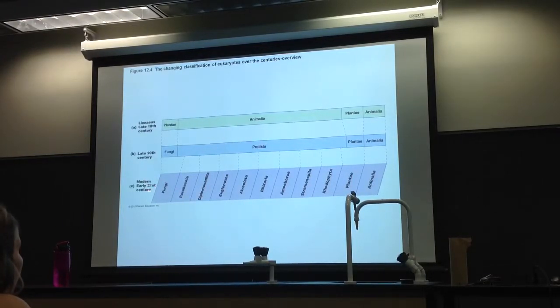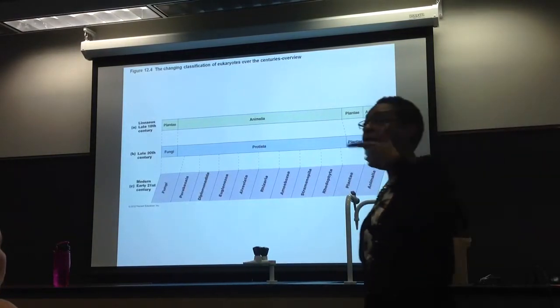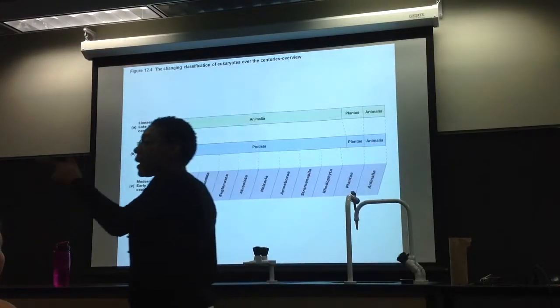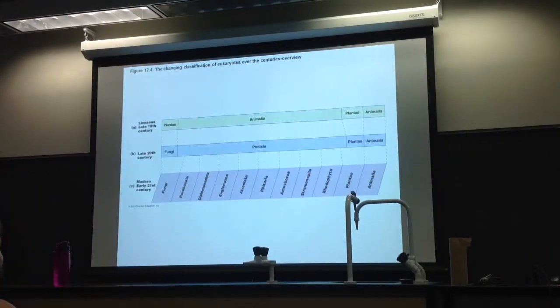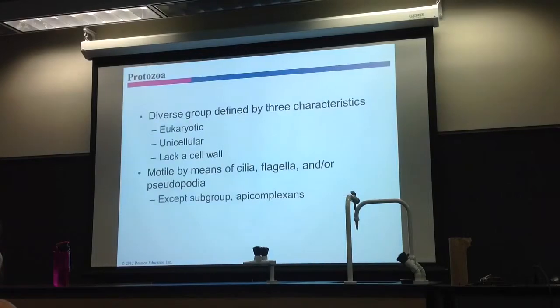But now, in this century, we still got kingdom fungi, we've still got plantae, we still got animalia, but we basically cut protista into separate little classifications. Now, do you have to know all of these guys? No. Simply know that the kingdom formerly known as protista used to have algae, used to have protozoans, and used to have slime molds and water molds. All right, stay with me, that's good. Don't fade now.